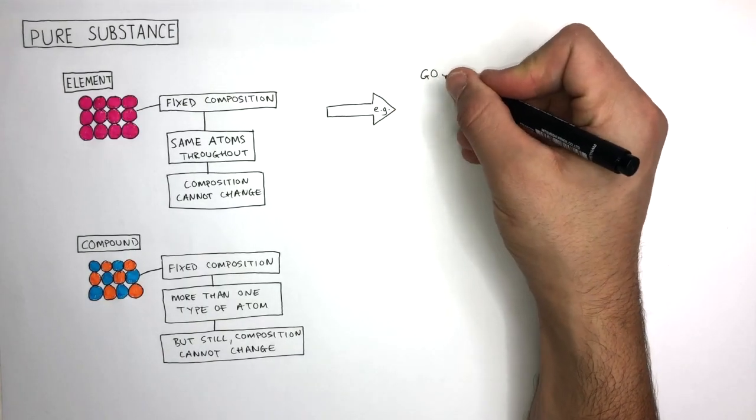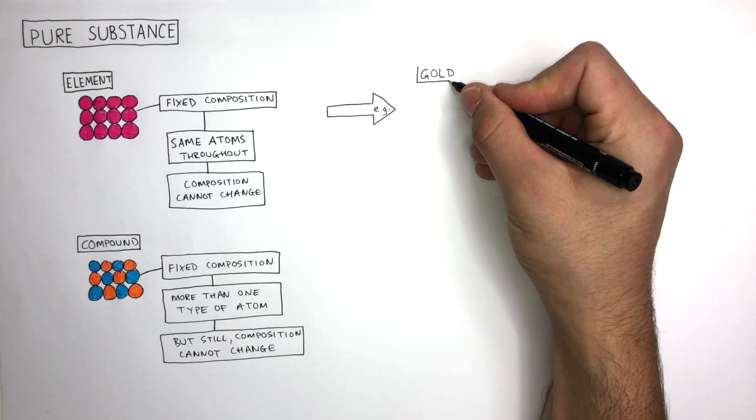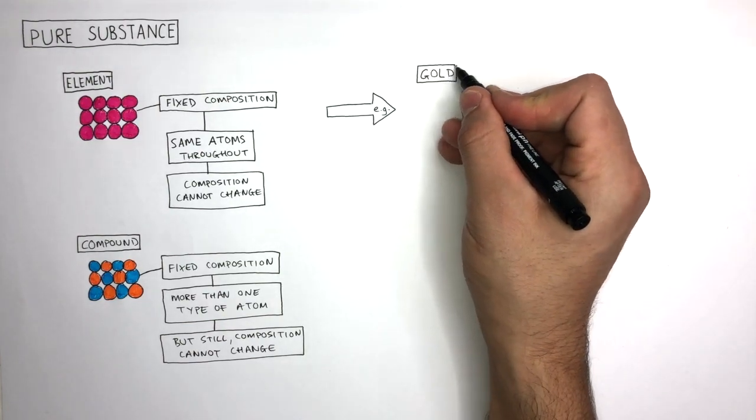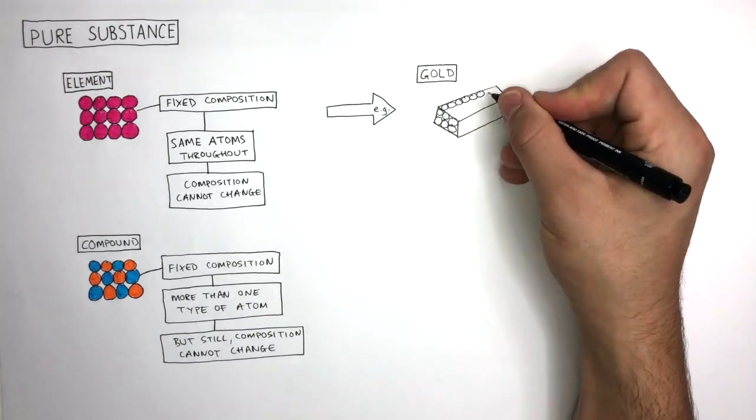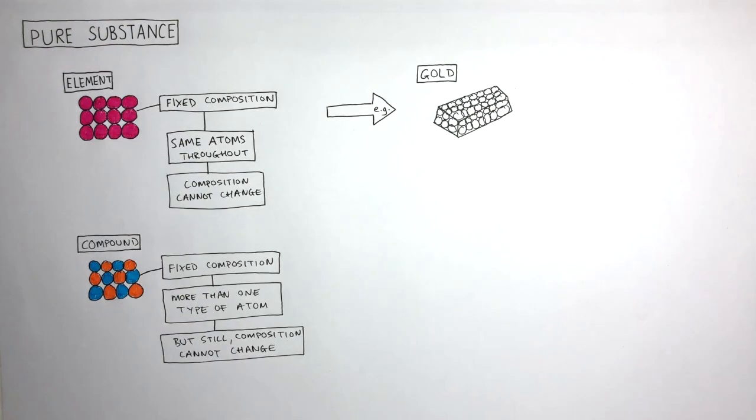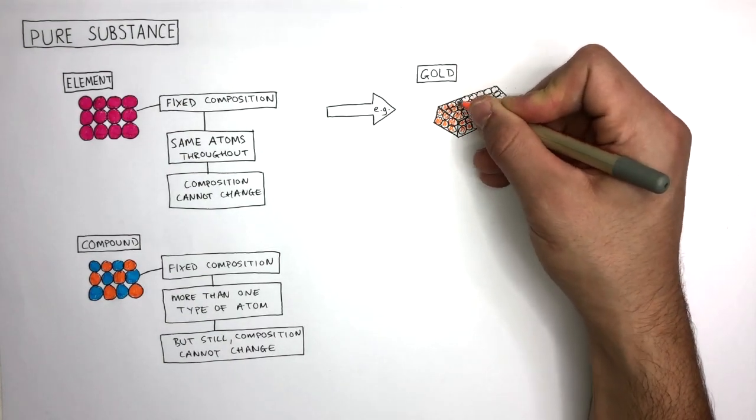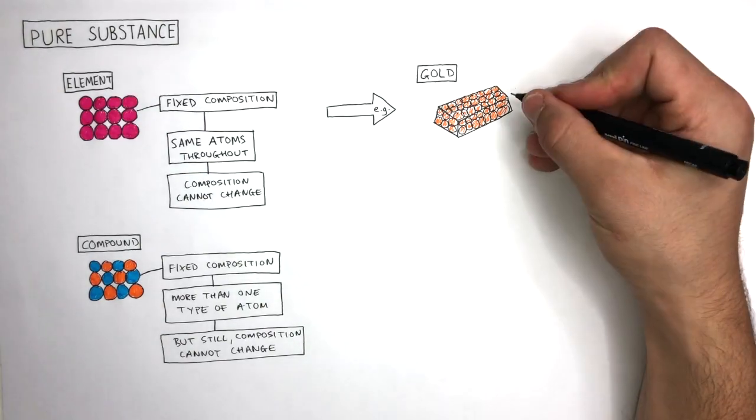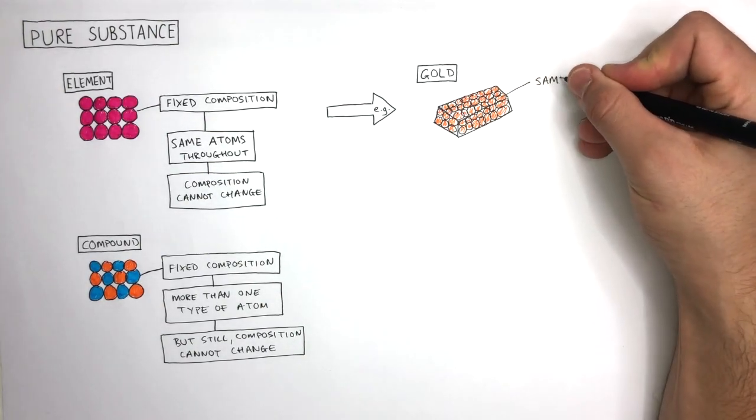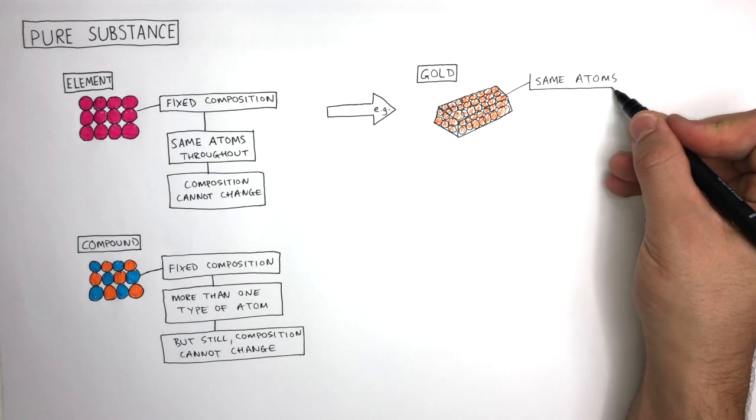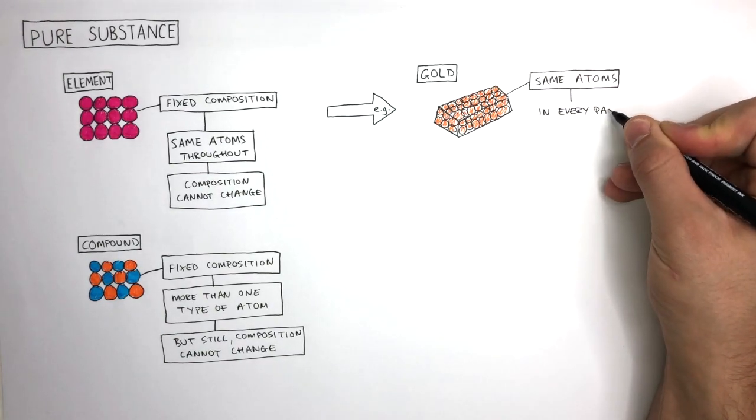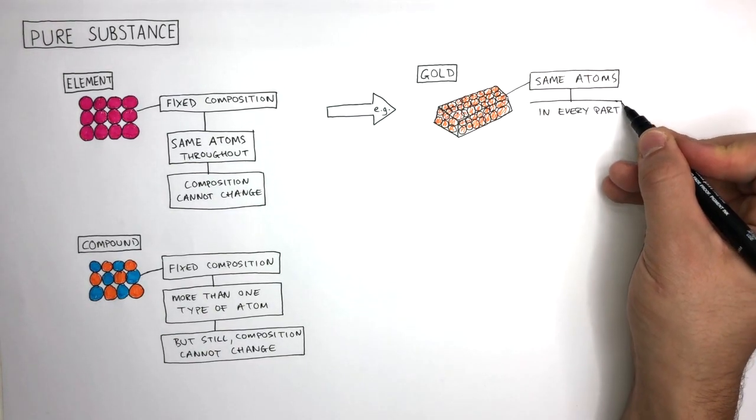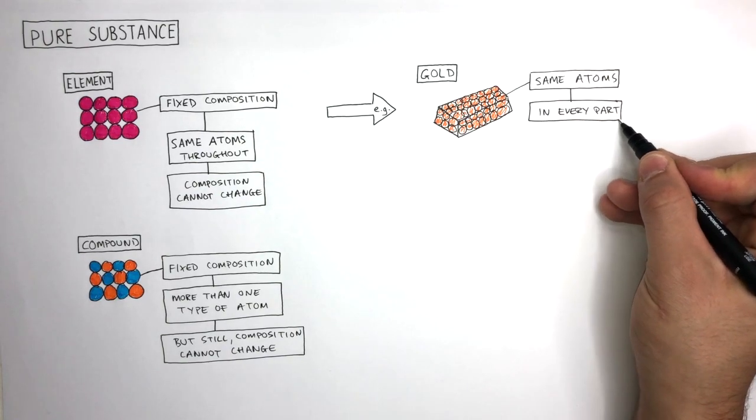Let's use the example of gold to explain why an element is a pure substance. Here I'm drawing circles to represent the gold atoms in a bar of gold. As you can see, they are the same throughout the structure. As there are the same type of atoms chemically bonded to each other, in every part of this bar of gold is what makes this a pure substance.